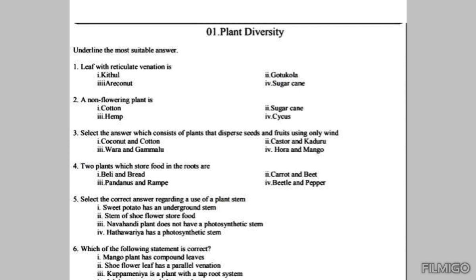First question: leaf with reticulate venation is? We know leaves have two types of venations. First one is reticulate venation and the second one is parallel venation. Normally, parallel venation can be seen in monocot plants such as kithul, arecanut, and sugar cane.